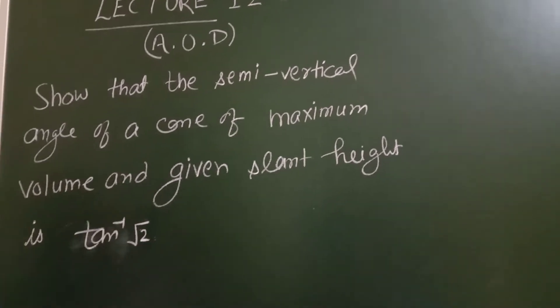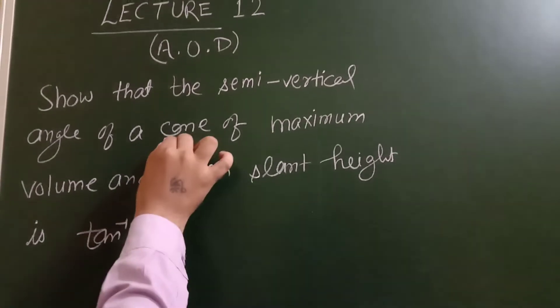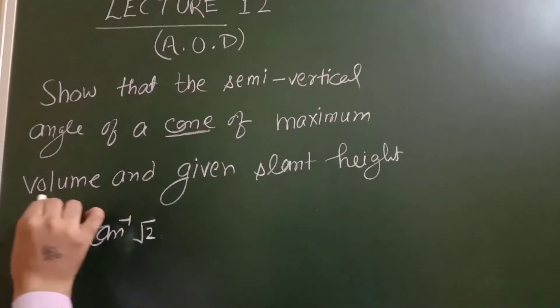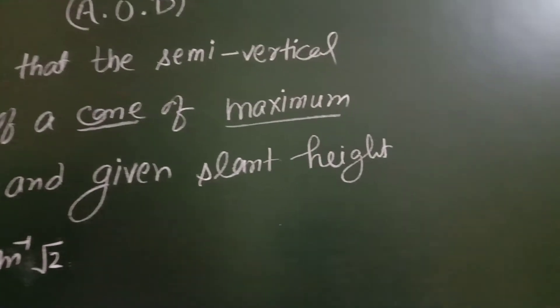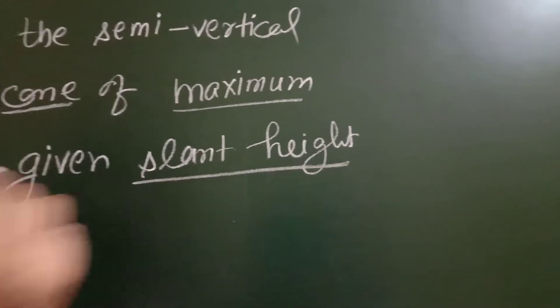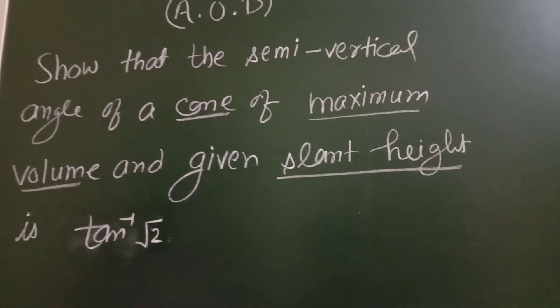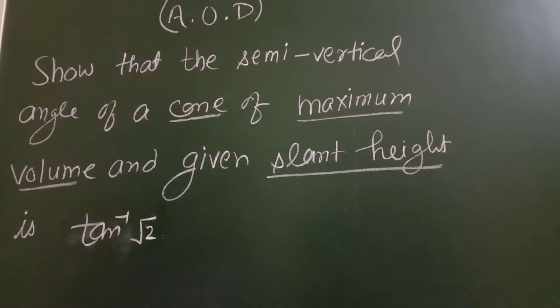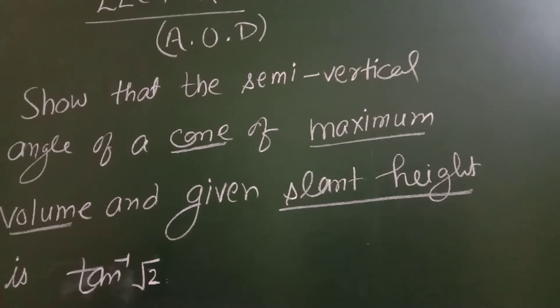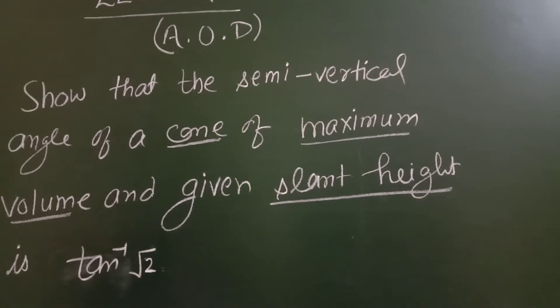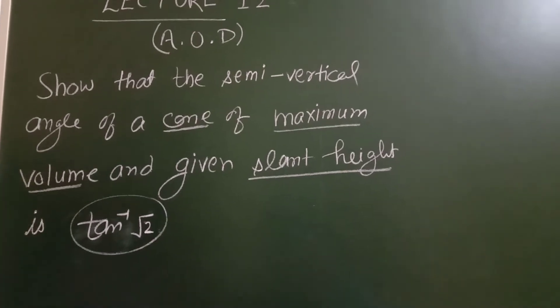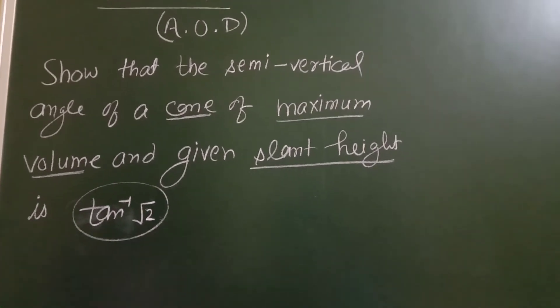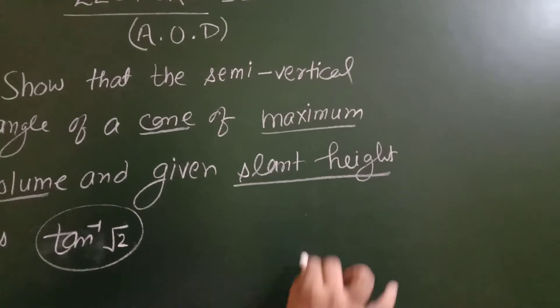So I am going to prove that if a cone of maximum volume is maximum and a cone of slant height is given, or a cone of slant height is constant, that means the cone's radius or height can vary. So in that situation, the semi-vertical angle has tan⁻¹(√2).